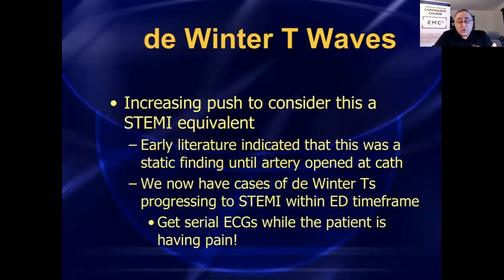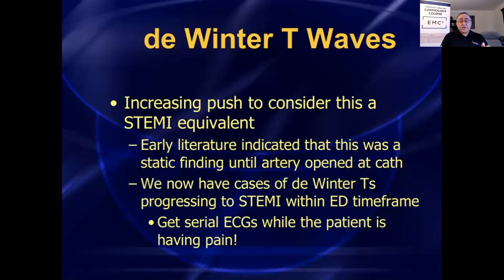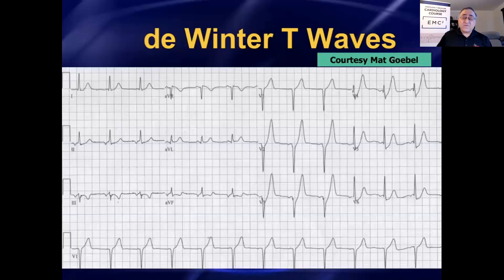There's an increasing push to get these patients to the cath lab immediately. In fact, the newest guidelines published in the U.S. in October 2022 — that I referred to earlier — have now incorporated the de Winter T wave into the guidelines for emergent activation. So when you see this pattern, you ought to get on the phone and try to get this patient to the cath lab as quickly as possible.